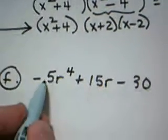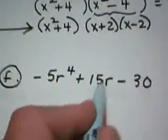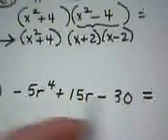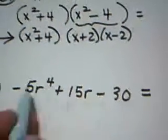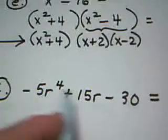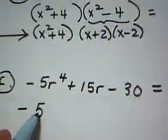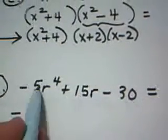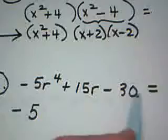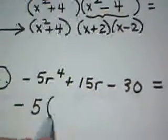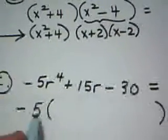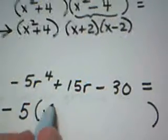Part F gives me the expression the opposite of 5r to the 4th plus 15r minus 30. This is an expression. I'm going to look for my GCF. And in this particular case, my GCF is going to be the number negative 5. A pretty safe rule to use in algebra: when an expression starts with a negative, the GCF should be negative. Notice the reason we can't take out any r's is because the 30 doesn't have any factors of r in it. First, I'm going to pull out a negative 5, factor it out is a better way to say it. In the front slot, that would leave me with r to the 4th.